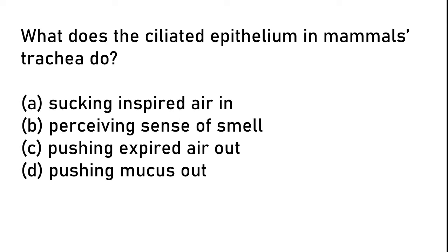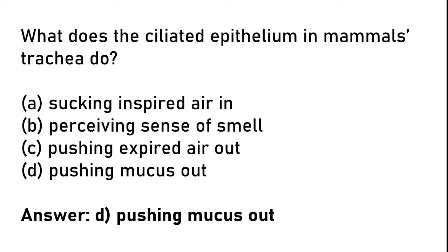What does the ciliated epithelium in a mammal's trachea do? (A) Sucking in inspired air, (B) receiving sense of smell, (C) pushing expired air out, (D) pushing mucus out. The correct answer is option D: pushing mucus out.